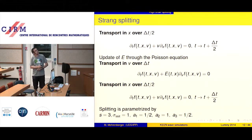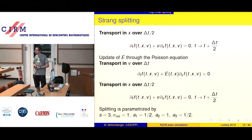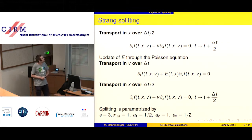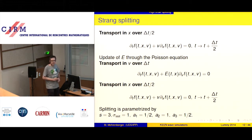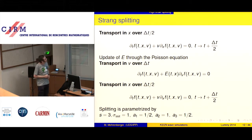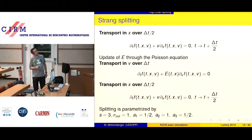Now we move to time discretization. The favorite scheme is the classical Strang splitting, which is second-order accurate and used in almost every paper on Vlasov-Poisson simulation. We solve a constant transport equation in the x-direction, then in the v-direction, then again in the x-direction.